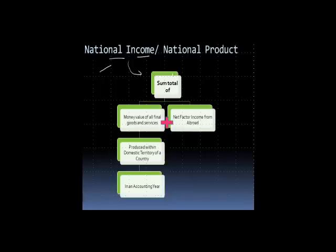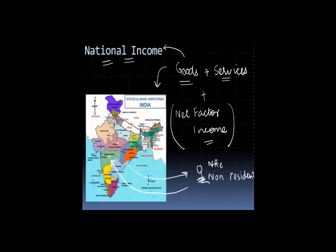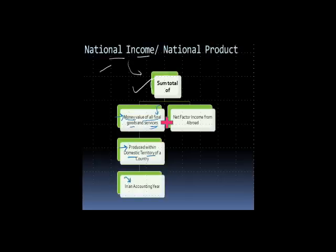Now, let me show that to you. National income is the sum total of money value of all final goods and services produced in a country. When we talk about the goods and services, we are talking about the final goods and services, not the semi-processed. When we take the money value of all the goods and services produced within the domestic territory of a country — so when we say for India, we are going to look at what falls within the domestic territory of India. We will not include anything from China or Bangladesh or any other place — only the domestic territory of India, in an accounting year.